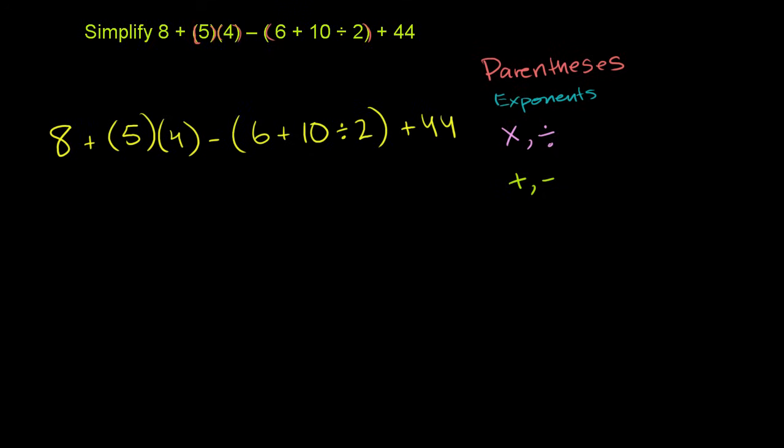So we're going to want to do the parentheses first. We have parentheses there and there. Now this parentheses is pretty straightforward. Inside the parentheses it's already evaluated, so we could really just view this as 5 times 4. So let's just evaluate that right from the get go.